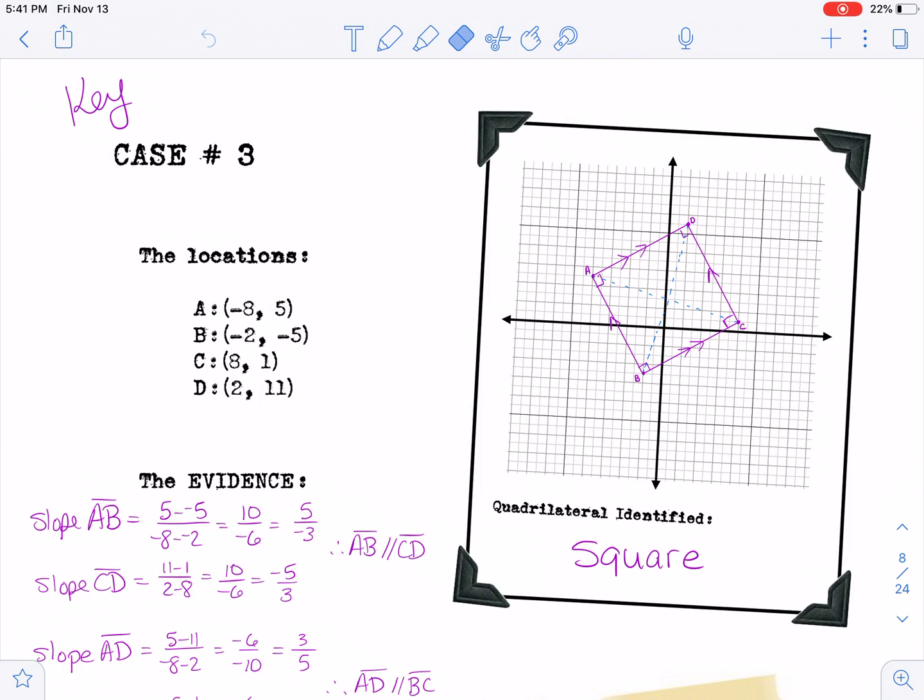I'm not actually going to show all of the working out, although it's all here. So you would of course plot those points and then when you look at it, you have a hunch that it's a square.